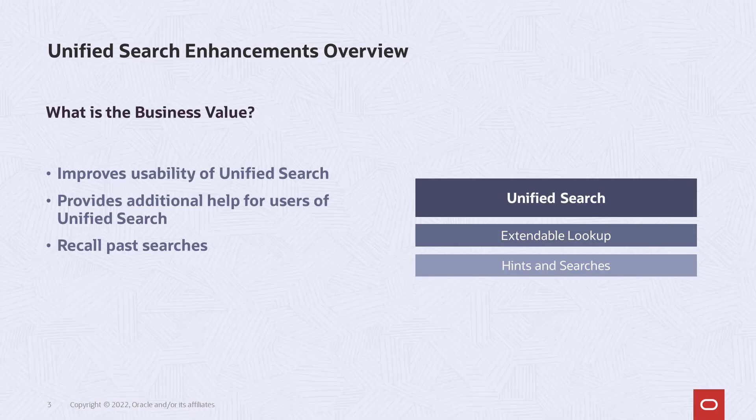The unified search capability was introduced in a past release as part of the Redwood User Experience adoption. It is used to quickly find information across your service from a common search experience. In this release, we have enhanced the search to provide more information to improve the usability for configured searches.